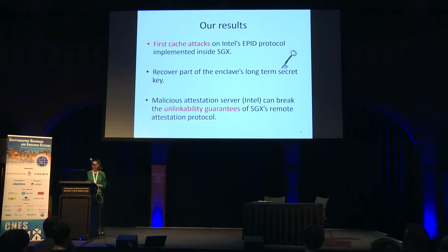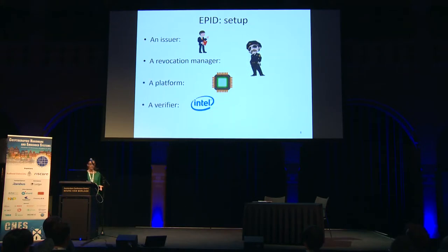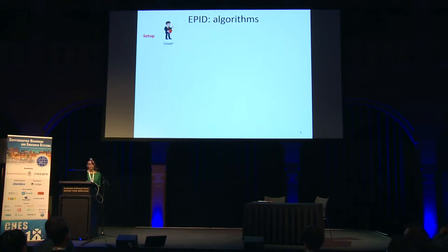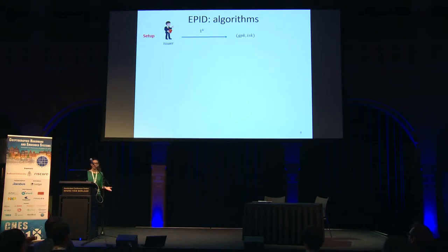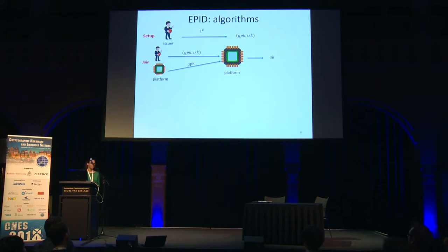To explain the attack, here is some background on EPID. EPID has four entities: an issuer, a revocation manager, a platform, and a verifier — which in our case is Intel. The issuer acts as a group manager, deciding who joins the group. On input 1^k, the issuer runs a setup algorithm to output a group public key and an issuer secret key. A platform joins the group via a join protocol with the issuer, and learns a secret key sk that is private and unique per platform.